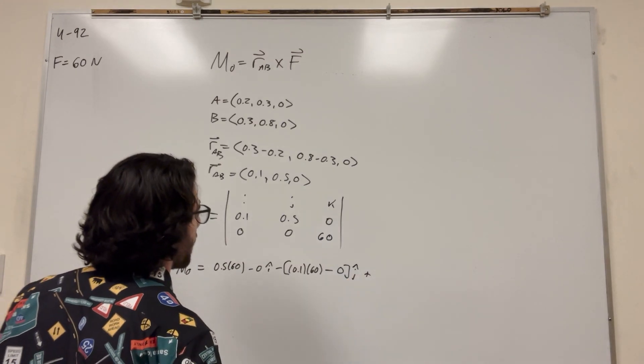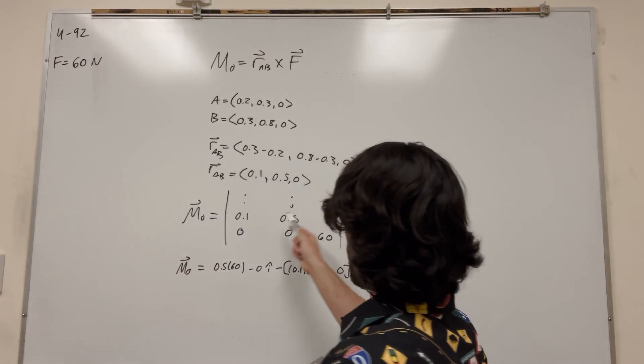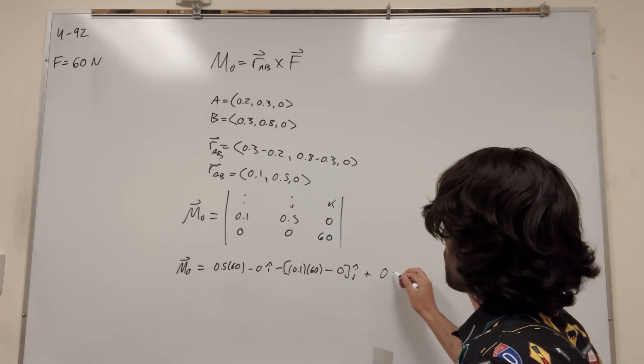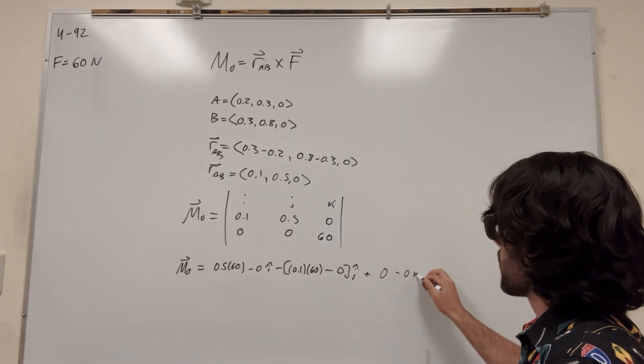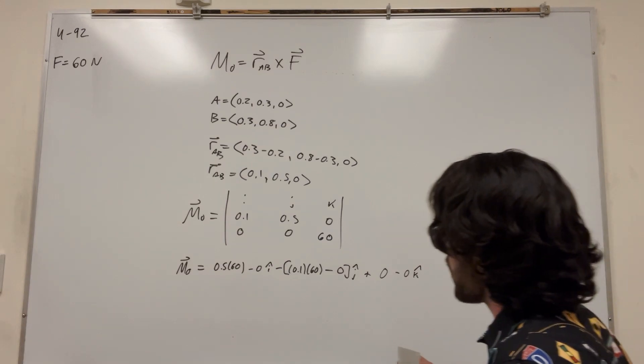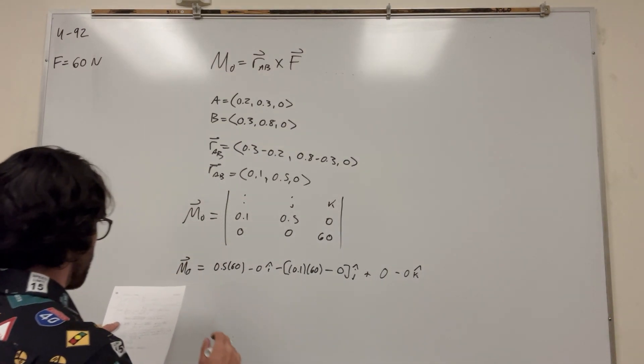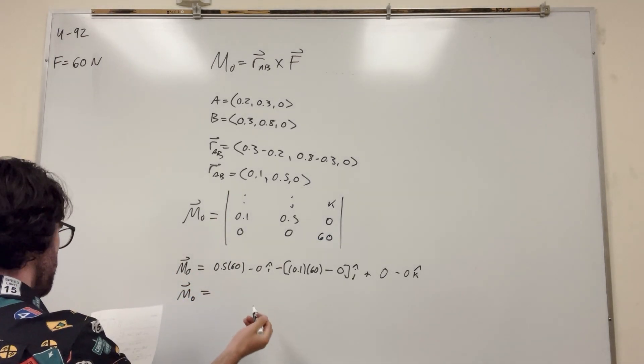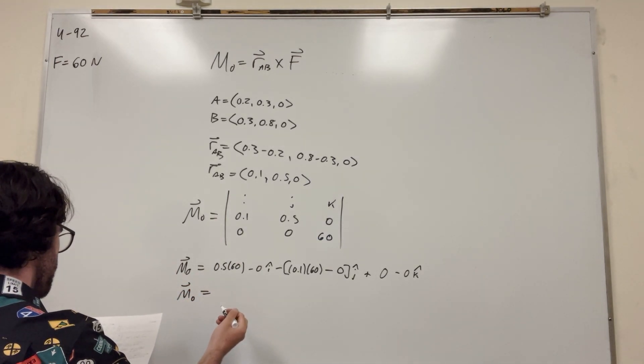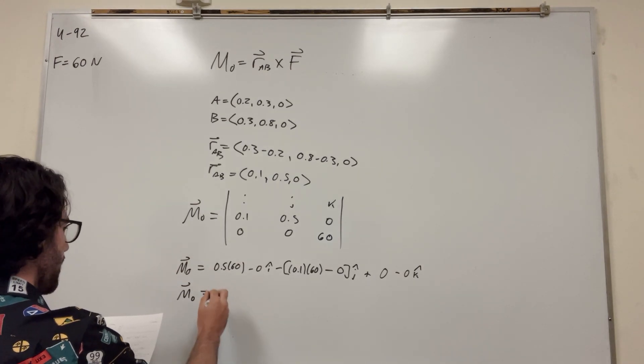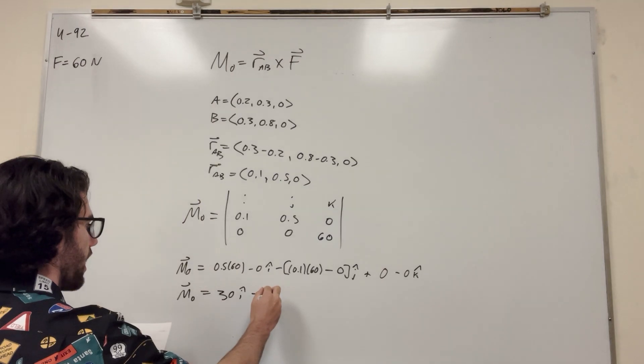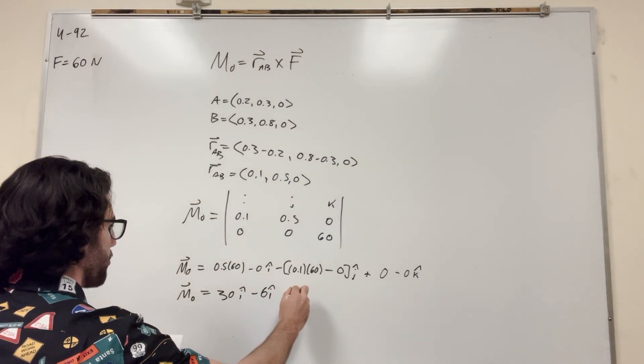And then we're adding K again. So K, we're going to take K, 0.1 times 0, so it's going to be 0, minus 0, K. So then if you simplify this out a little bit, we're going to get 30I minus 6J. And this is in newton meters.